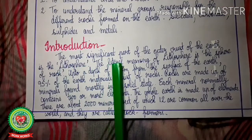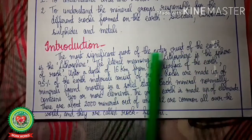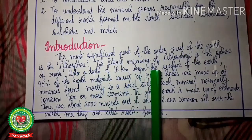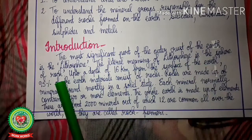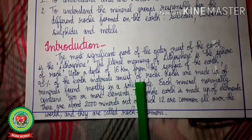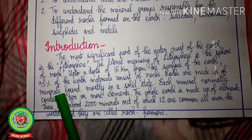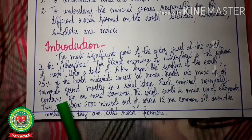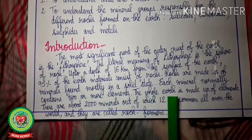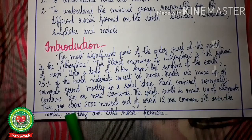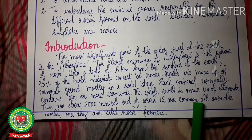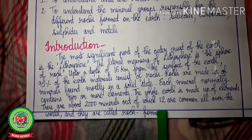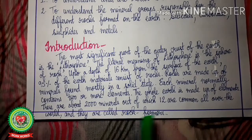The most significant part of the outer crust of the earth is the lithosphere. The literal meaning of lithosphere is 'the sphere of rock.' Up to a depth of 16 km from the surface of the earth, 95% of the earth materials consist of rocks. Rocks are made up of minerals found mostly in a solid state. Each mineral normally contains two or more elements. There are about 2000 minerals, out of which 12 are common all over the world and they are called the rock formers.